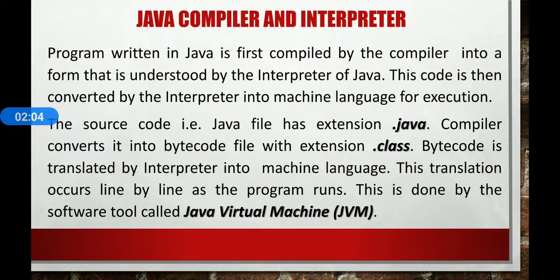The source code, that is the Java file, has the extension .java. The compiler converts it into a bytecode file with the extension .class. Bytecode is then translated by the interpreter into machine language, and this translation occurs line by line as the program runs. This is done by the software tool called the Java Virtual Machine. Any computer having the Java Virtual Machine can run Java bytecode.